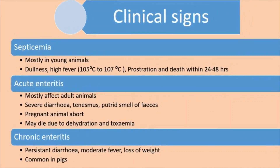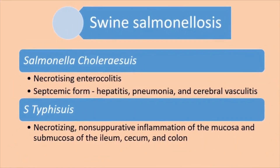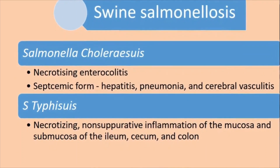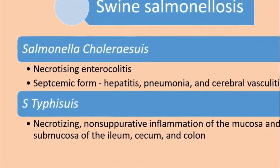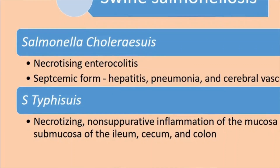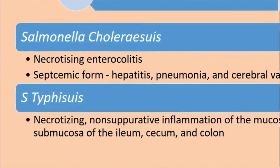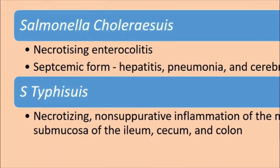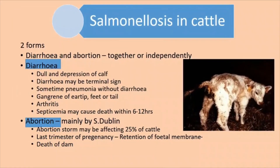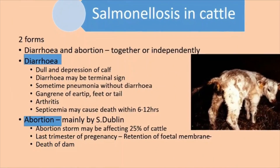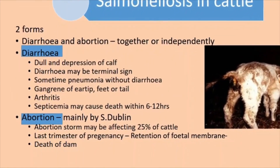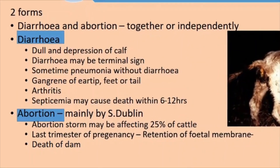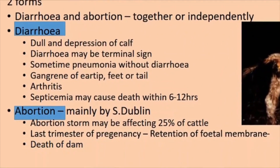This chronic form is most commonly seen in pigs. Swine salmonellosis and salmonellosis in cattle are the major ones we are dealing with here. Salmonellosis in swine is mainly caused by Salmonella choleraesuis as well as Salmonella typhimurium. When studying salmonellosis in cattle, we can divide it into two forms — enteric form and abortion form — and they can be seen either together or in separate forms.